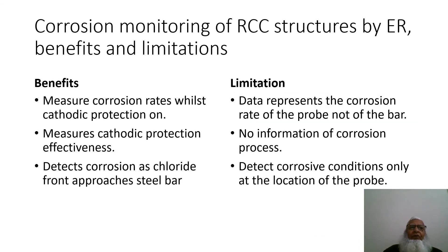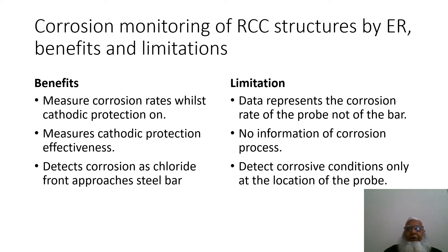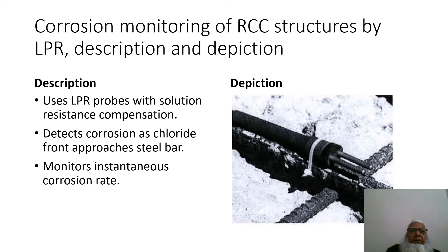Benefits of corrosion monitoring of RCC structures by ER probe: measures corrosion rates whether cathodic protection is on or off; measures cathodic protection effectiveness; detects corrosion as the chloride front approaches the steel bar. Limitations: data represents the corrosion rate of the probe, not of the rebar; no information on the corrosion process; detects corrosive conditions only at the location of the probe.